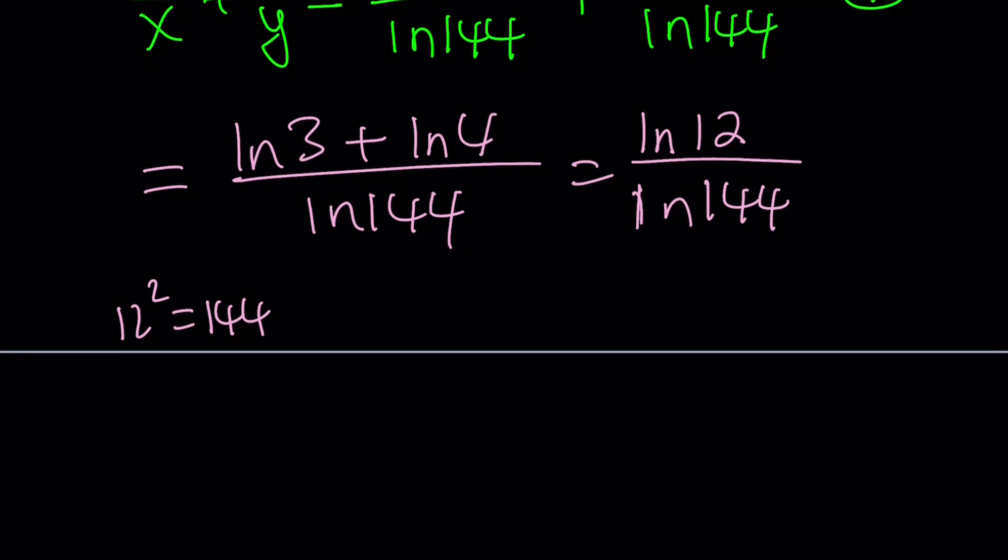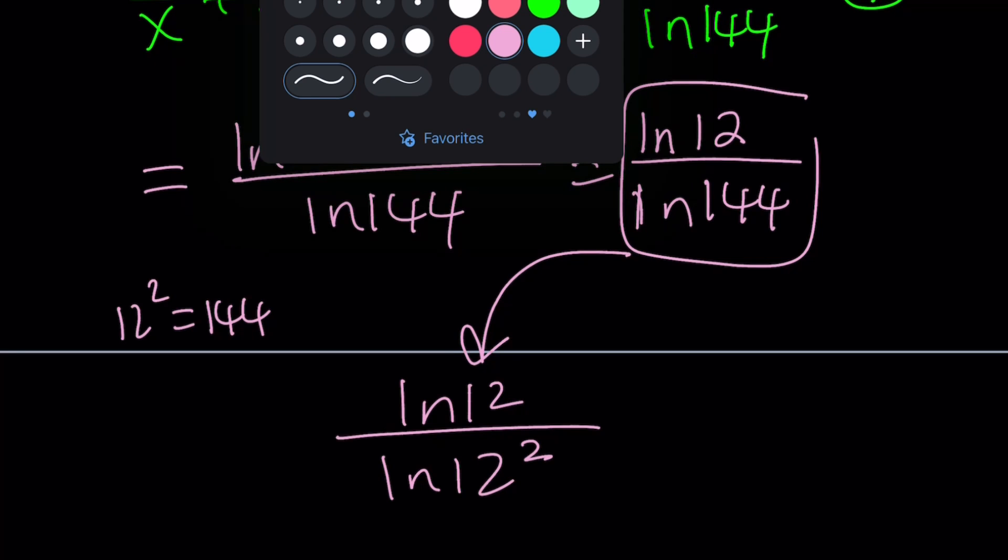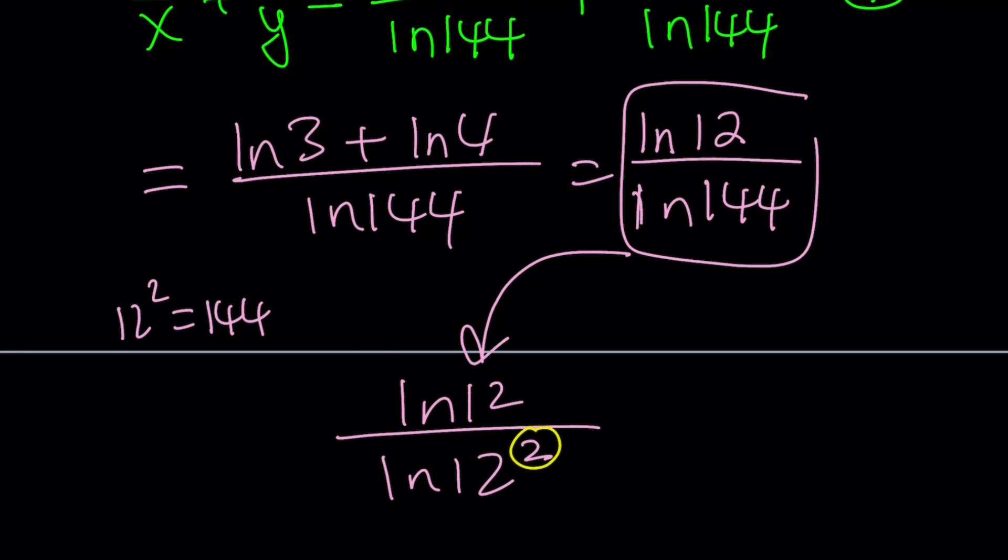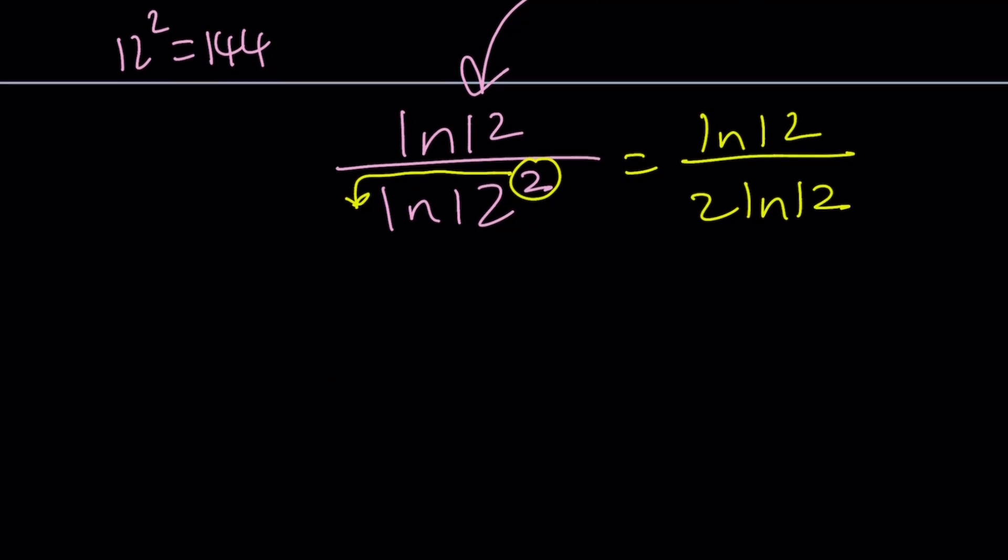So from here, I can go ahead and write ln 144 as ln 12 squared. And another nice property of logs pops up. We can bring this down and write this as ln 12 over 2 times ln 12. That's the nice thing about logs: you can bring the powers down. And this gives us a really nice, simple expression. The answer is 1 half.